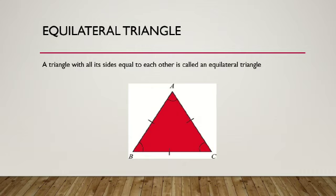Equilateral triangle — a triangle with all its sides equal to each other is called an equilateral triangle. In triangle ABC, AB is equal to BC is equal to CA. All three sides are equal, that's why triangle ABC is an equilateral triangle.